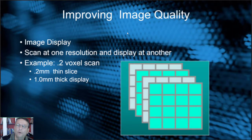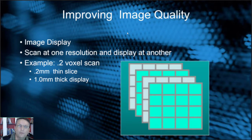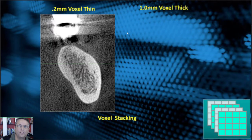Another thing you can do to improve image quality is adjust the display — the way we look at or display the images. We might scan at one resolution but display at another. For example, I might scan a case at a 0.2 voxel — that's a very thin slice. At first it might look noisy because there's not much information per slice. So what we do is stack slices up to one millimeter thick, taking five slices to stack the jaw and get the image to look cleaner. A lot of software does this automatically, but let me give you an example in case you want to do it yourself.